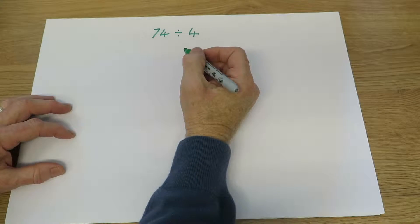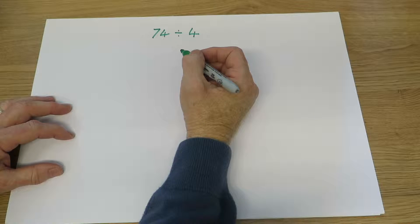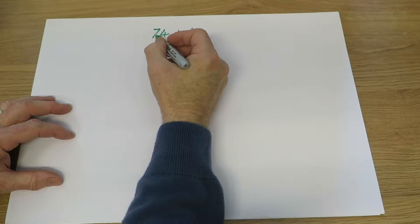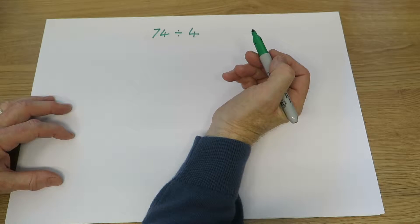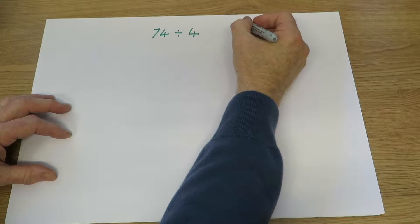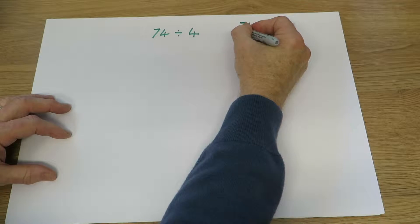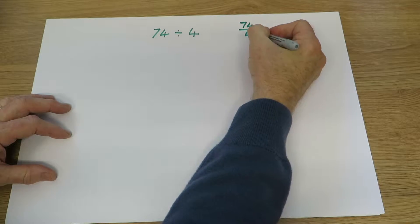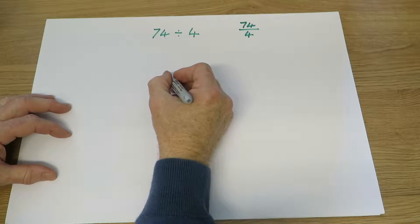They will begin to work with remainders, fractions, and decimals. For example, working on questions such as 74 divided by 4, they may express the question as a fraction. 74 over 4 still says 74 divided by 4, but let's find the answer.